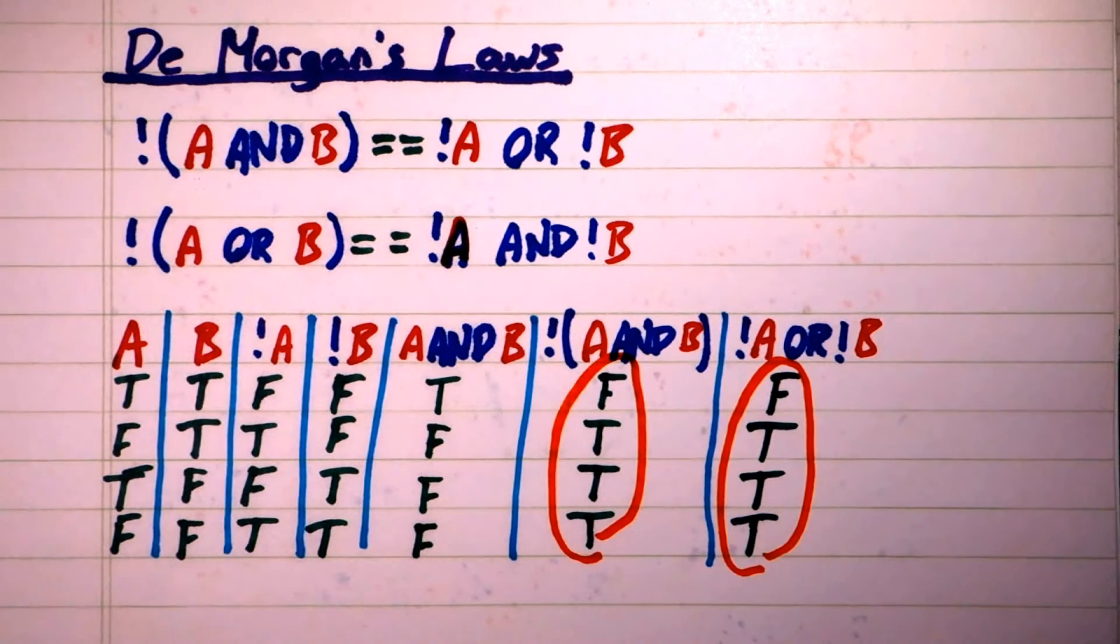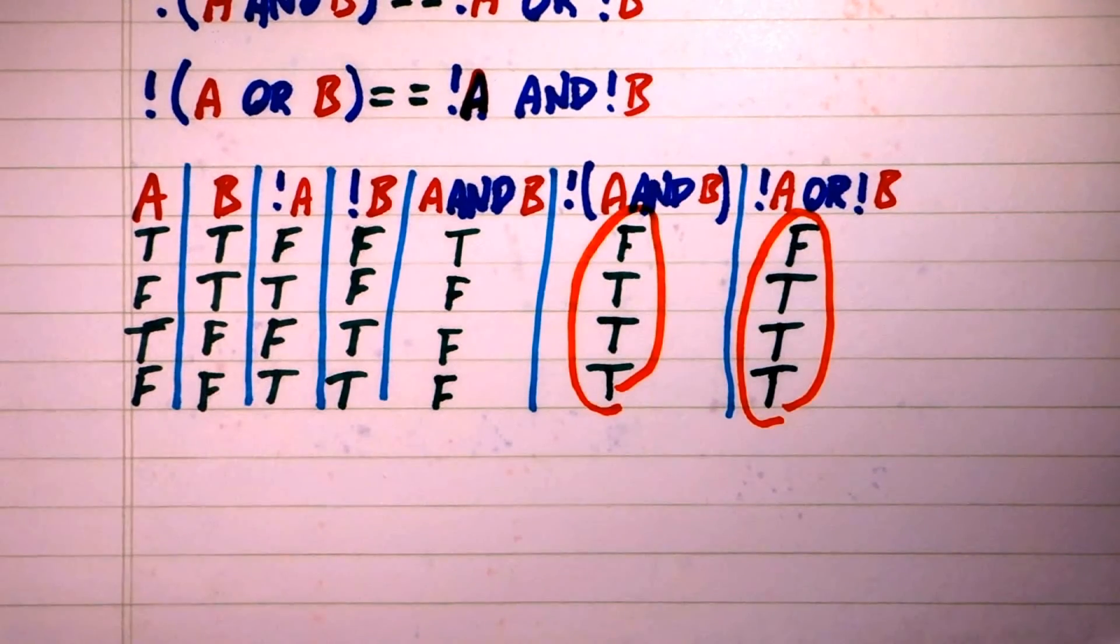See how they have identical values? This is extremely useful when you want to negate complex logic and still have it provide good semantic meaning.